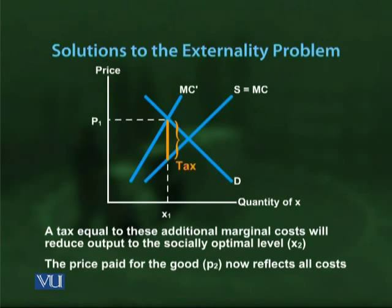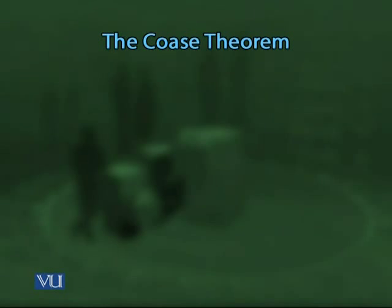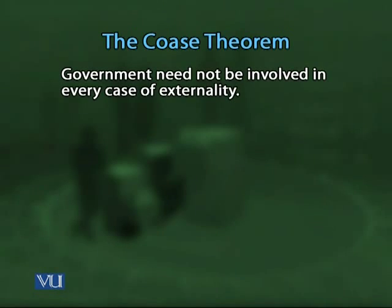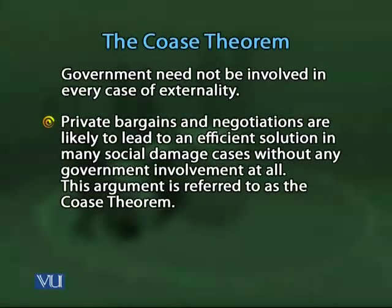According to the Coase theorem, it is possible to resolve these problems without government intervention only if bargaining costs are not substantially high. But if bargaining costs are high and many parties are involved, the government has to come into the picture.